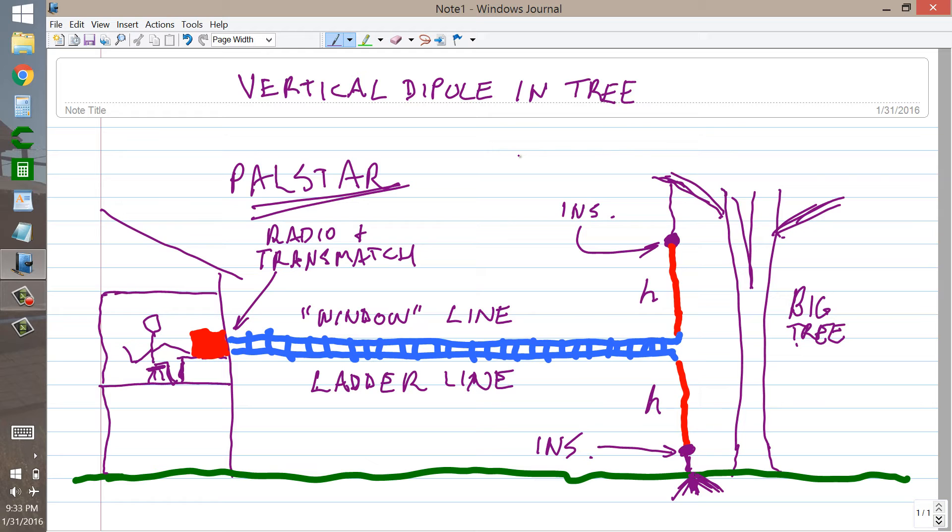They're all American made, and they work, I have one, and they're very good transmatches. So you've got your good old, it looks kind of old, doesn't it, kind of big radio, 75A4 receiver and a KWM2 transmitter, if you're old enough to remember what those were. A big old transmatch, like one of those old Viking transmatches that handled a kilowatt